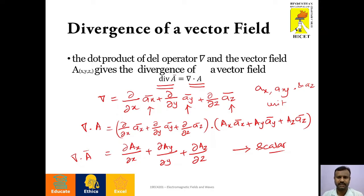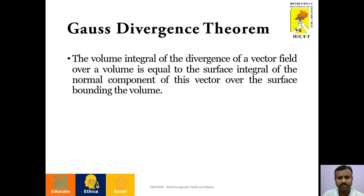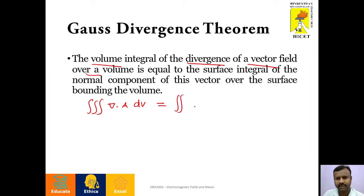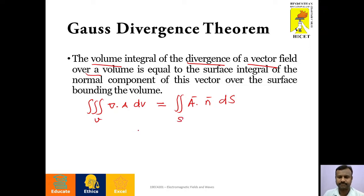The next part is Gauss Divergence Theorem. Gauss Divergence Theorem states that the volume integral of the divergence of a vector field — that is, the triple integral of del dot A over a volume — is equal to the surface integral of the normal component of this vector over the surface bounding that volume, ds. This Gauss Divergence Theorem connects the volume integral with the surface integral. This is the basic definition of Gauss Divergence Theorem.